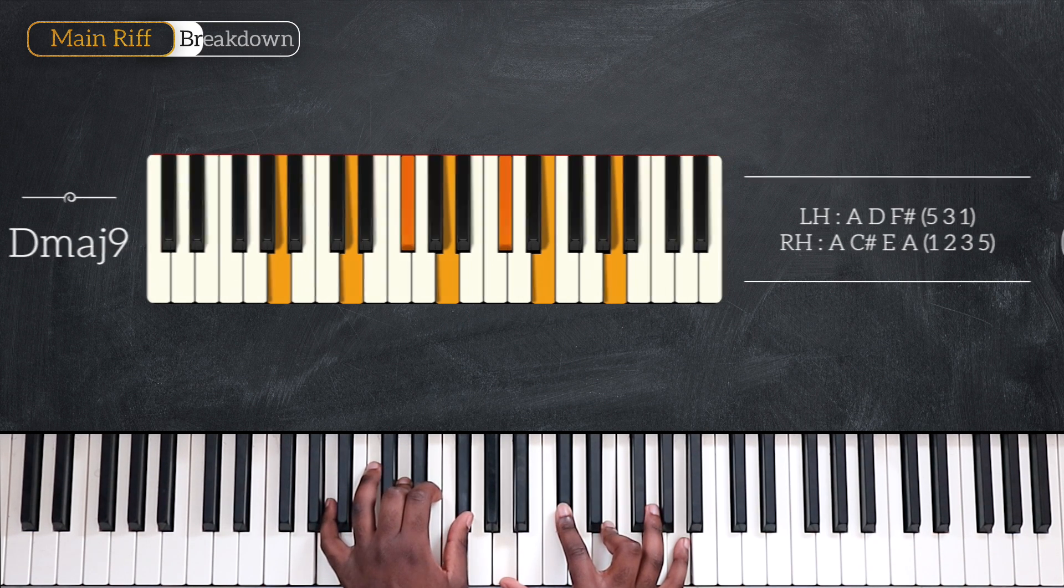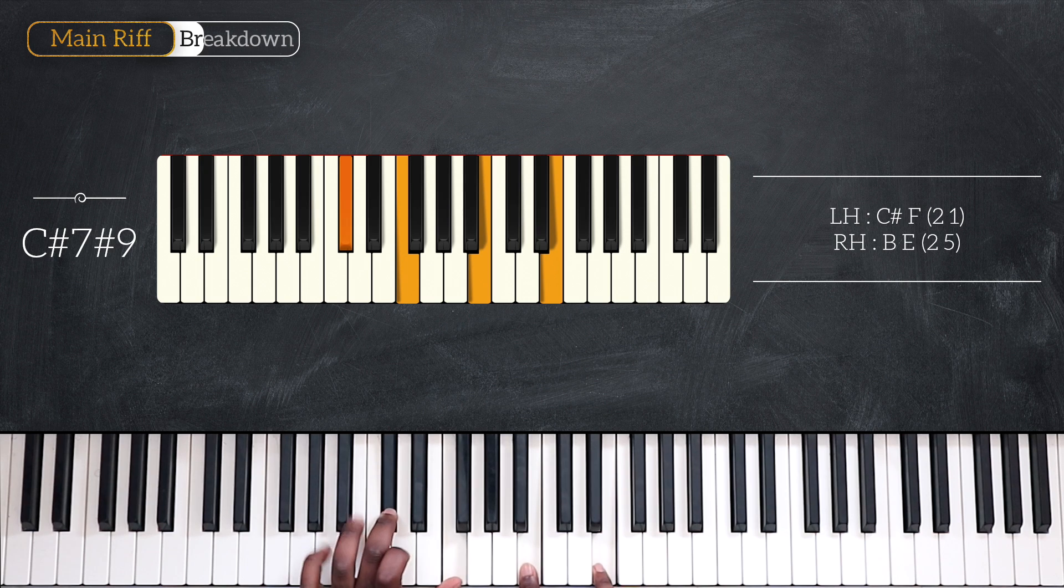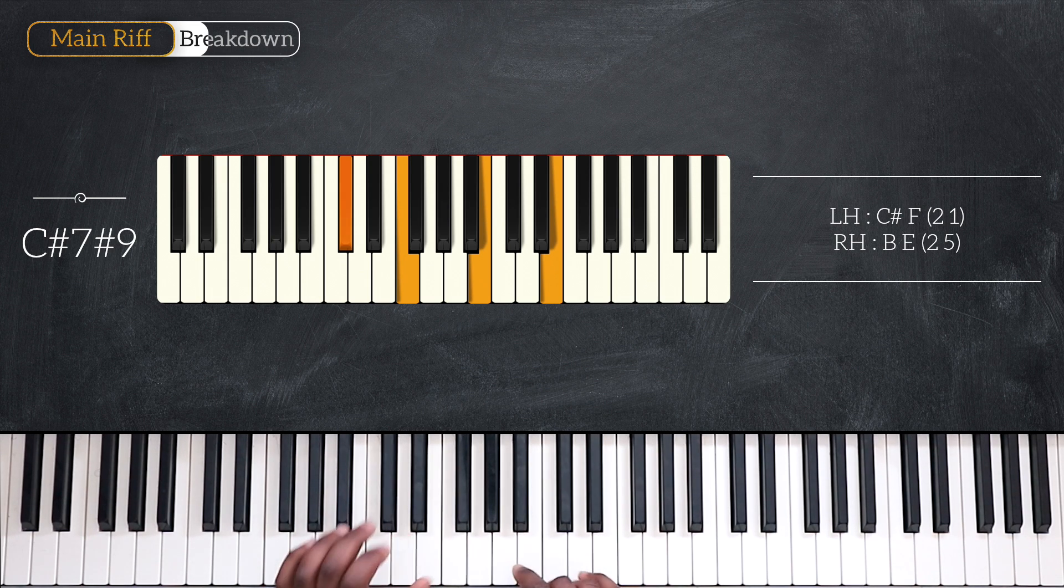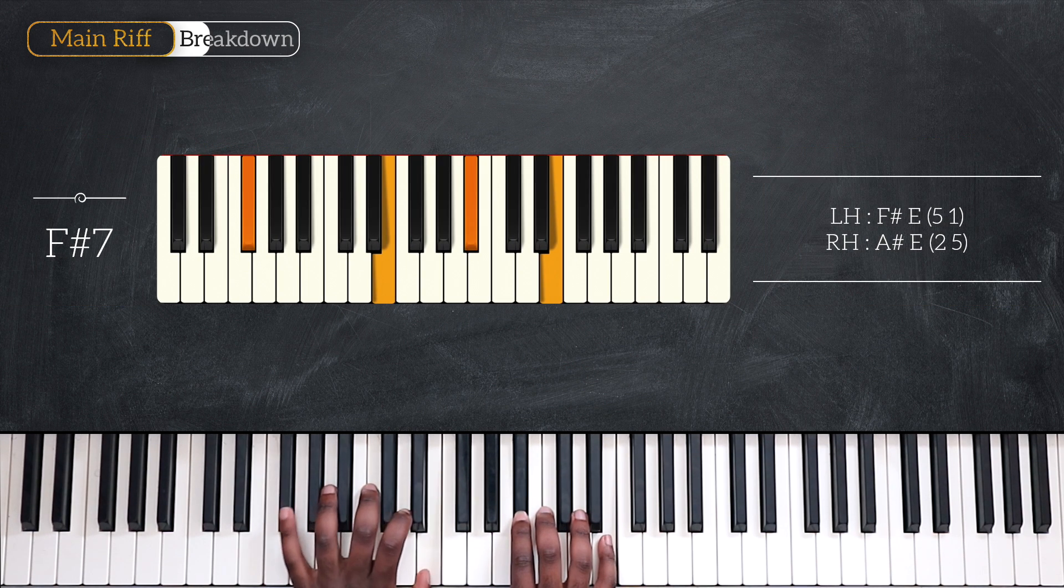And I'm going to end the main riff with two chords. The first one is C sharp 7 sharp 9: C sharp F, B, and E. And the very last one is F sharp 7: F sharp and E, A sharp and E.